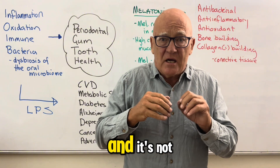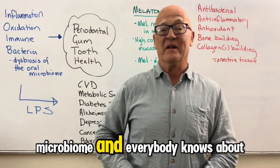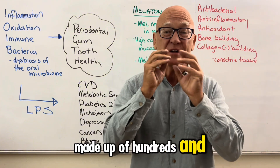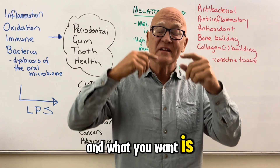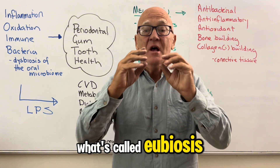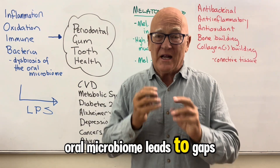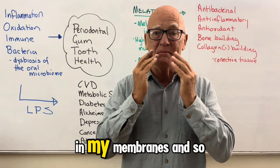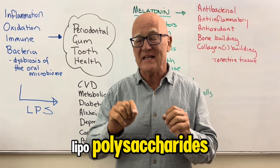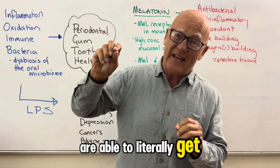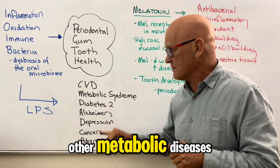It's not just any type — it's a bacterial dysbiosis. You have an oral microbiome, just as we have a gut microbiome. Your oral microbiome is made up of hundreds of different varieties and species of bacteria, viruses, and so on. What you want is a balanced eubiosis, but what we end up with in many cases is dysbiosis. This dysbiosis leads to leaky gaps in our mucus and membranes, so toxins produced by the bacteria — in particular a group called LPS, lipopolysaccharides — are able to get from the mouth into the blood.